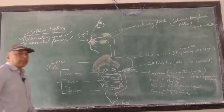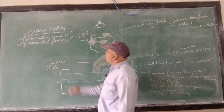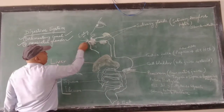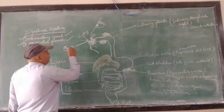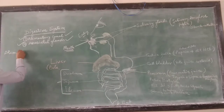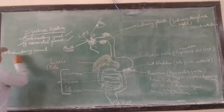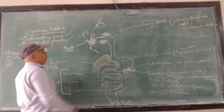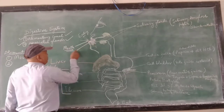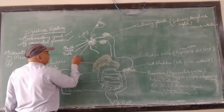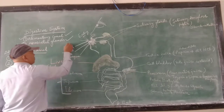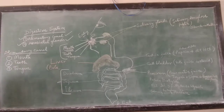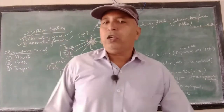The alimentary canal — let me label the parts that make it. The first part is mouth. In the alimentary canal, the first one is mouth. After the mouth, the mouth cavity contains the teeth and the tongue. In the previous video, I have already discussed about the functions of these parts.